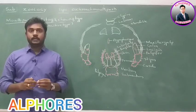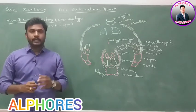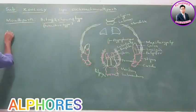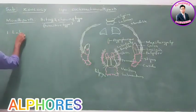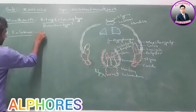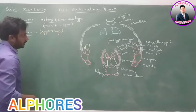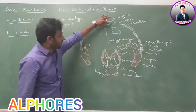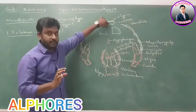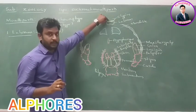What are the appendages present in the biting and chewing type of mouth parts? The first appendage is the labrum. Labrum is also called as upper lip. This is the upper lip — one triangular plate that hangs to the clypeus, as we discussed yesterday in the structure of the head.